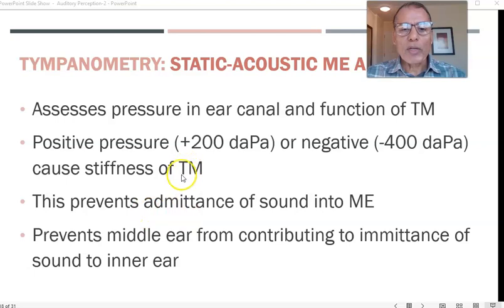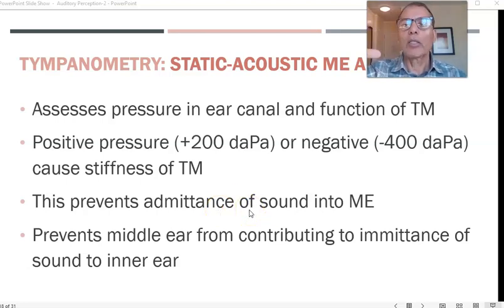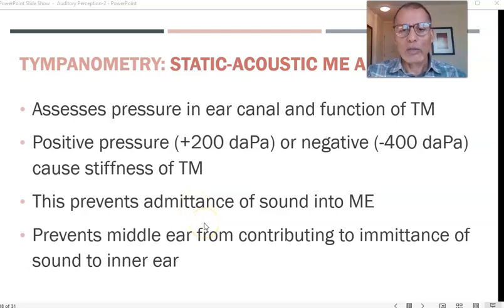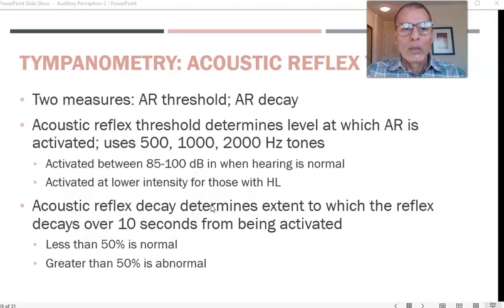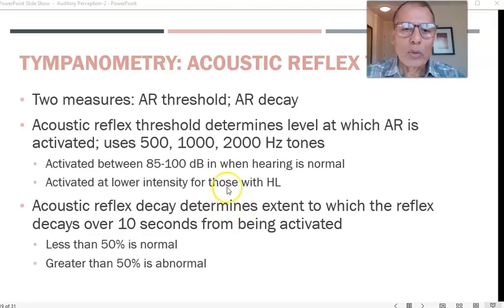The stiffness of the tympanic membrane prevents admittance of sound into the middle ear, and by doing so it basically takes the middle ear out of commission — it prevents the middle ear from contributing to sound transmission into the inner ear.